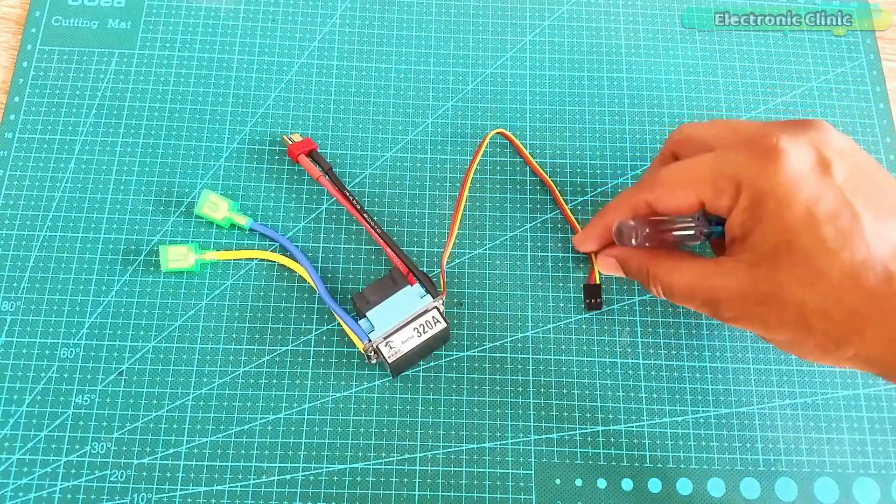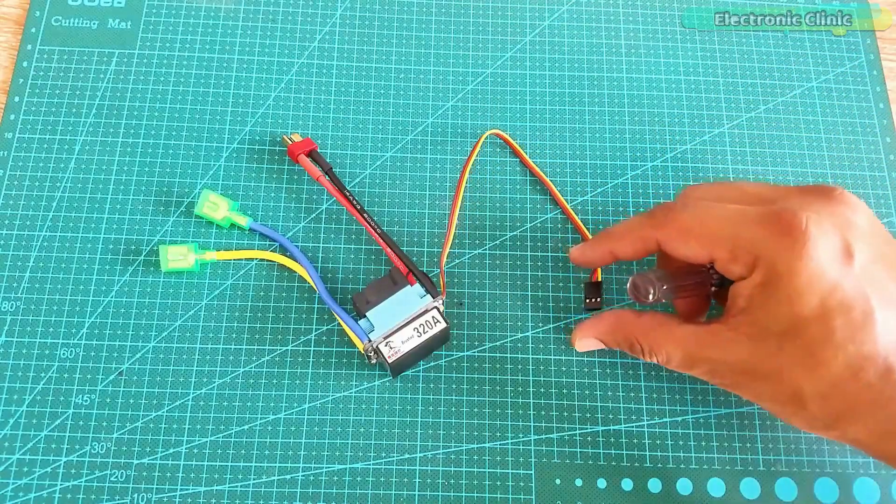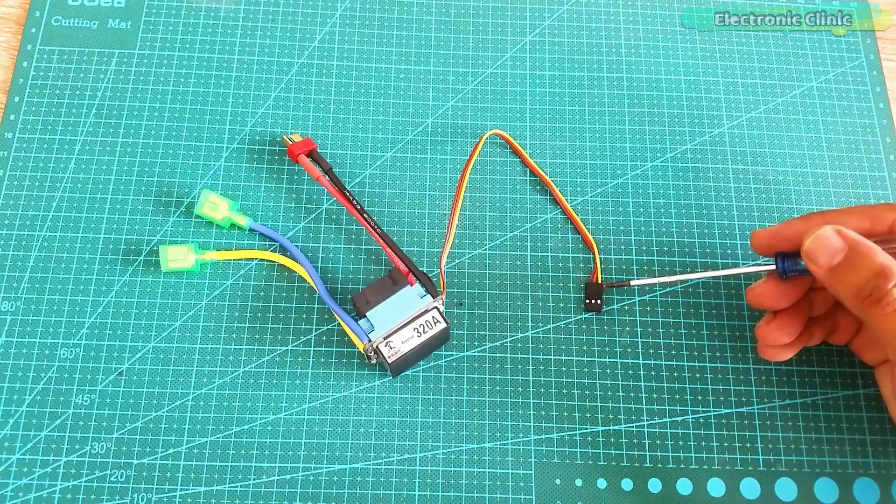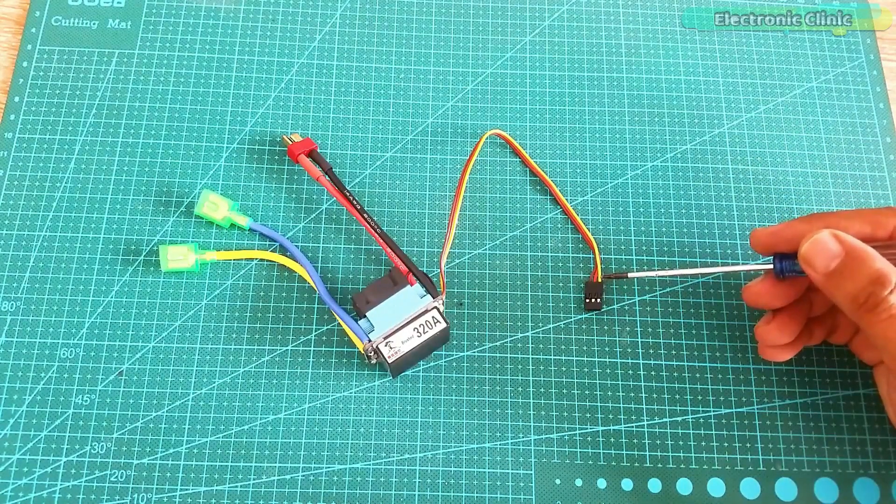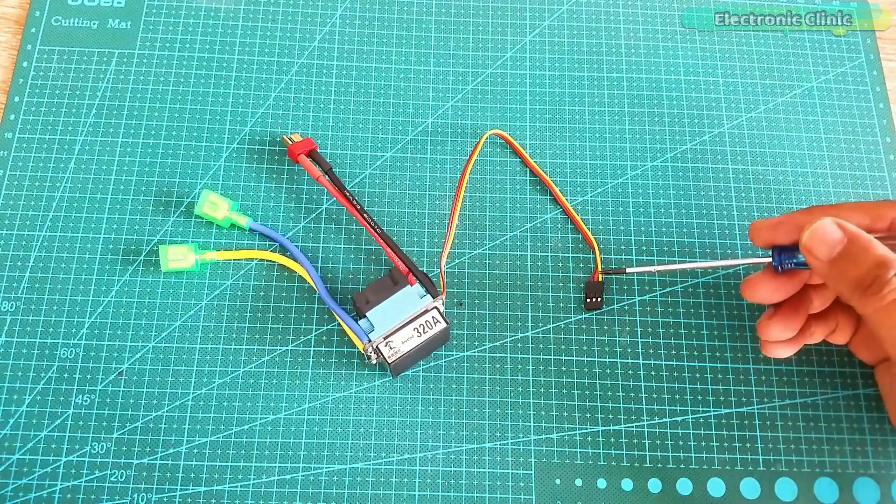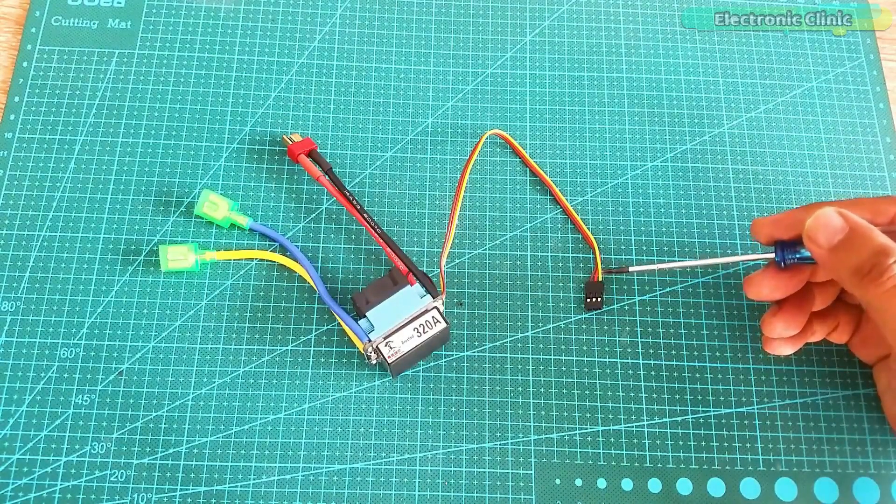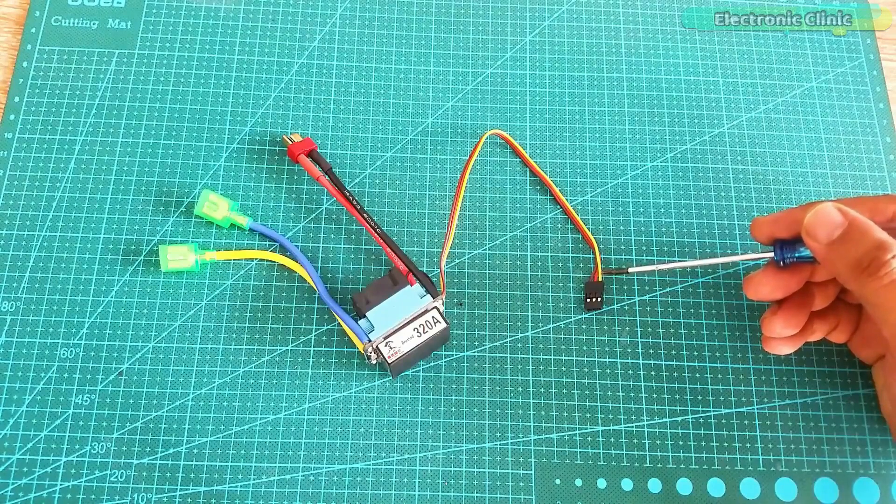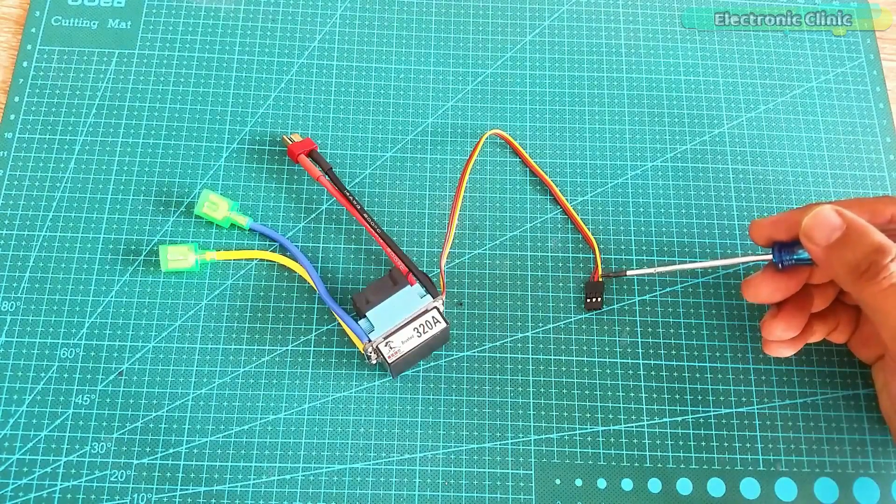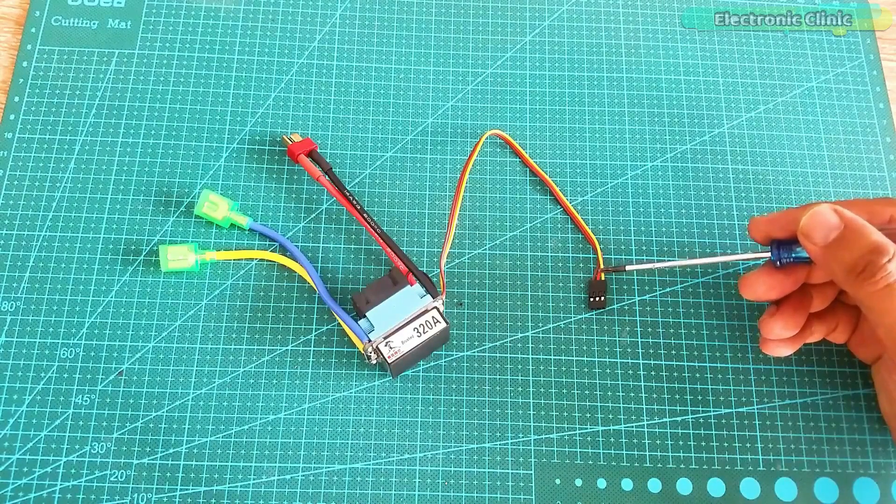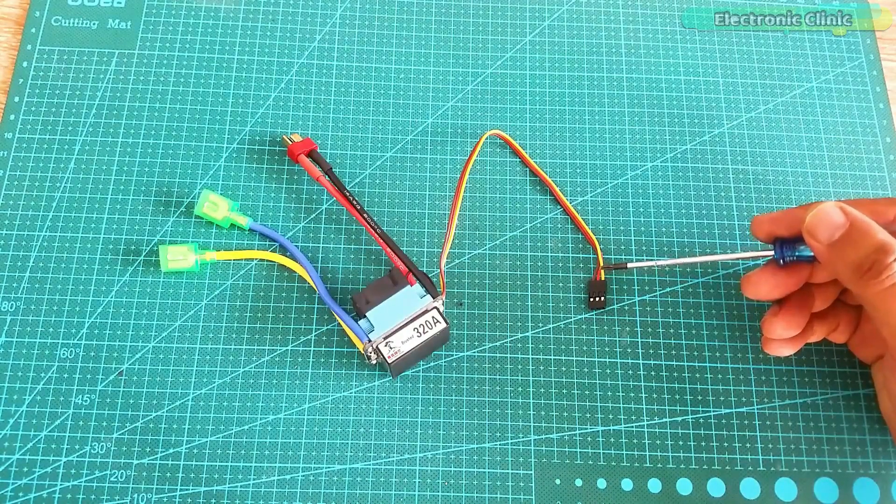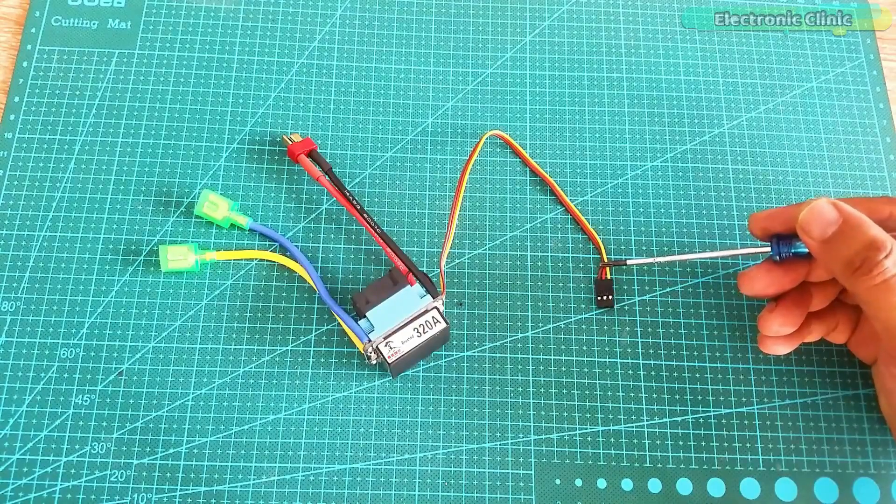These three wires are connected with the controller board like Arduino or a wireless receiver. The yellow wire is the signal wire. With this wire we send the PWM signal from our controller board to control the speed and direction of the 775 DC motor. The red wire is the 5 volt wire and it is used to power up the controller board or wireless receiver and the brown wire is the ground wire.